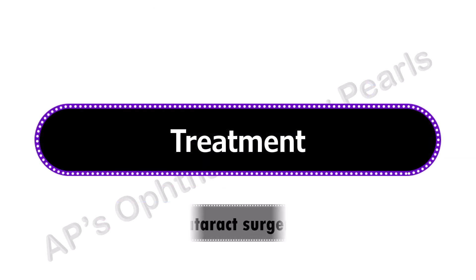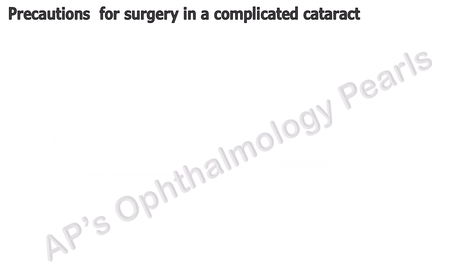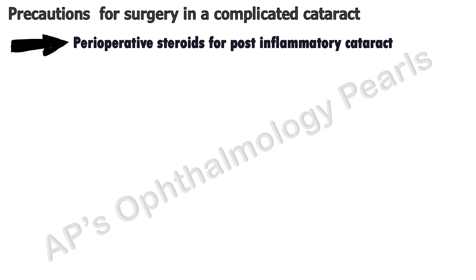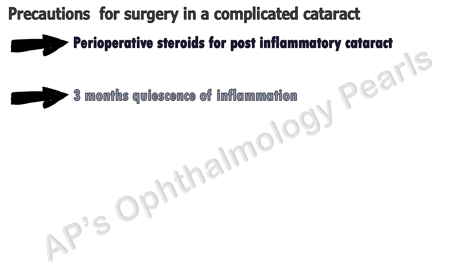Definitive treatment consists of surgical removal of the cataractous lens and insertion of a posterior chamber intraocular lens. Precautions for surgery in a complicated cataract, especially if it followed an inflammatory pathology: if the cataract occurred following uveitis, a flare-up of inflammation can be expected post-surgery, so perioperative topical or systemic steroids must be planned. Surgery on cataracts due to uveitis should be done after controlling the inflammation for at least three months, with the exception of lens-induced uveitis, where it should be performed as soon as the inflammation is controlled.